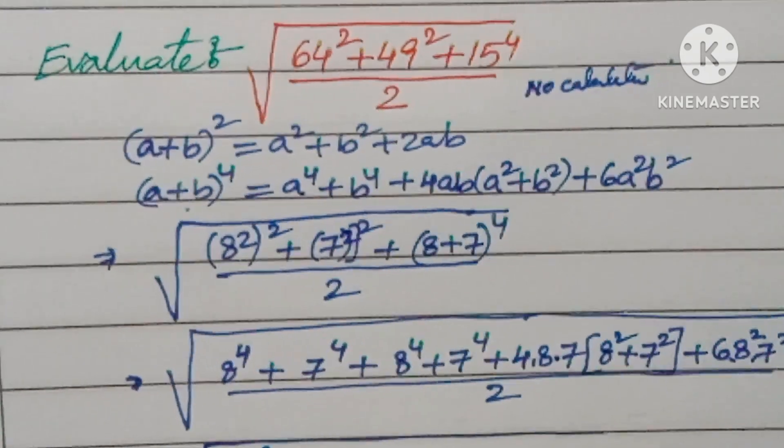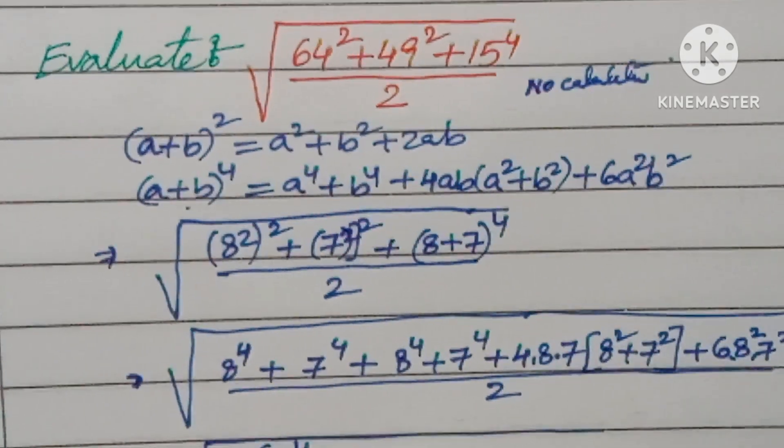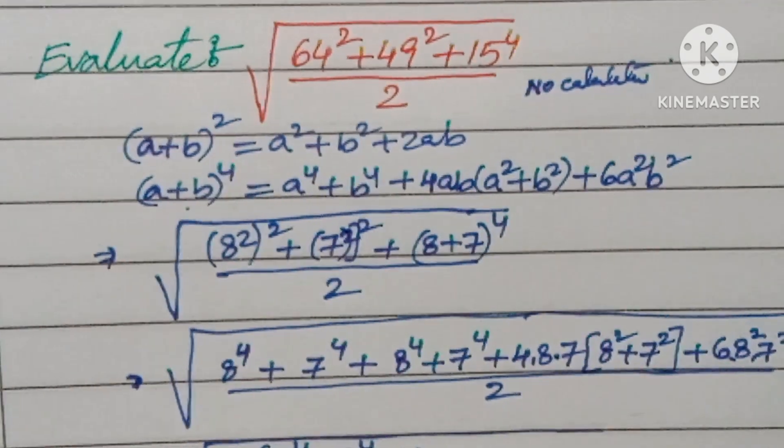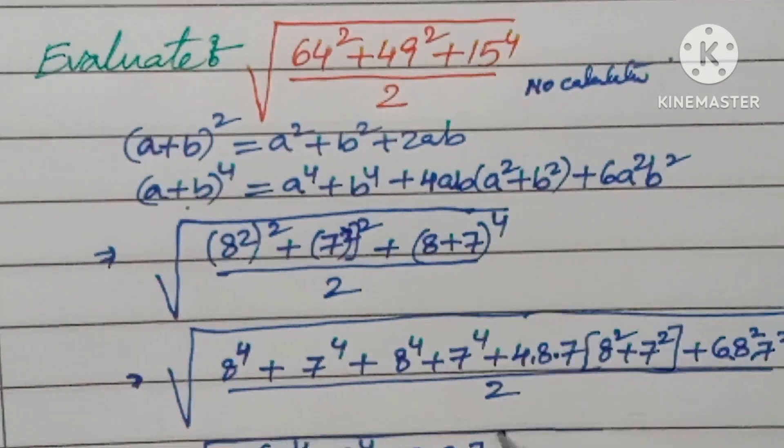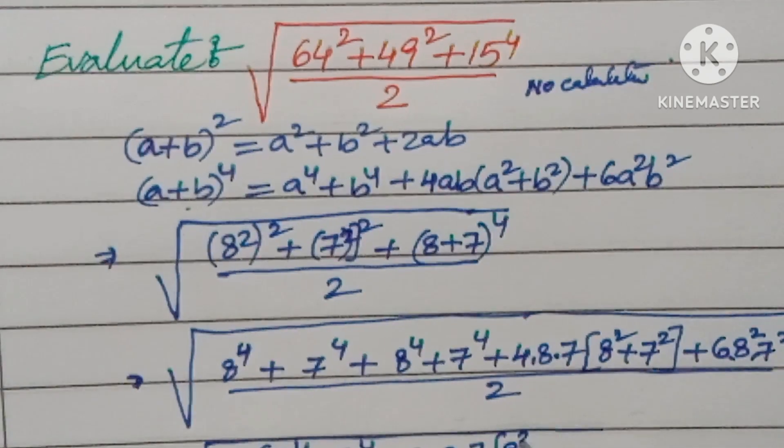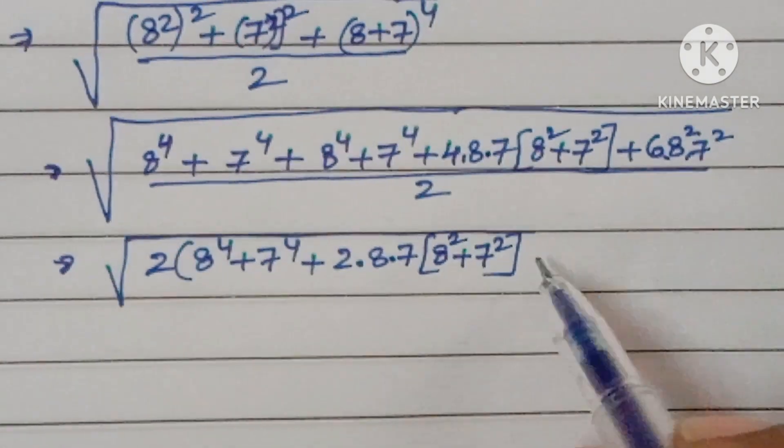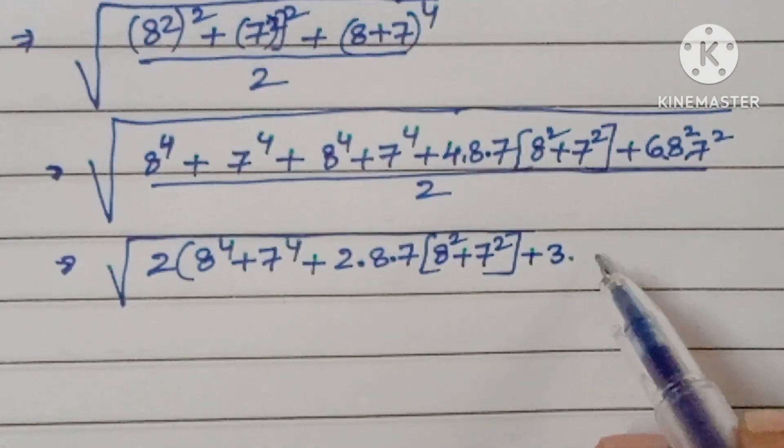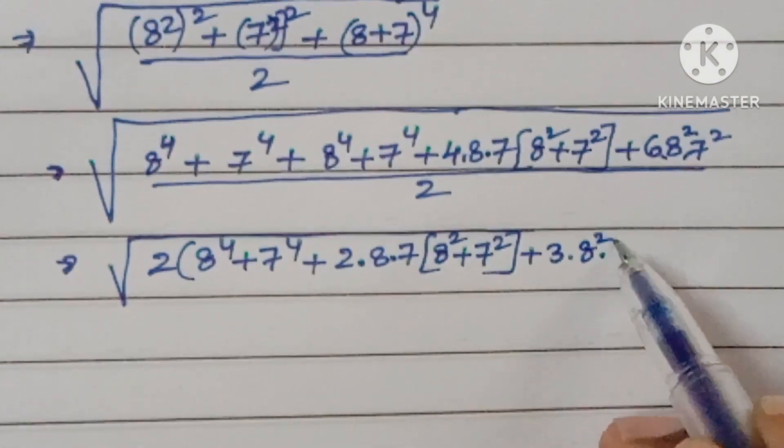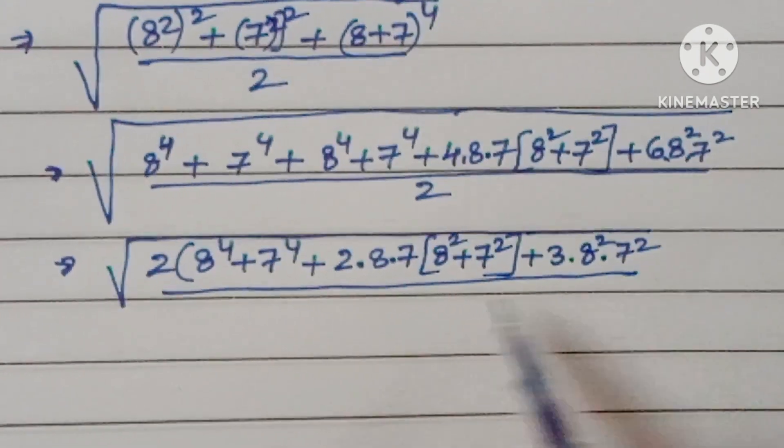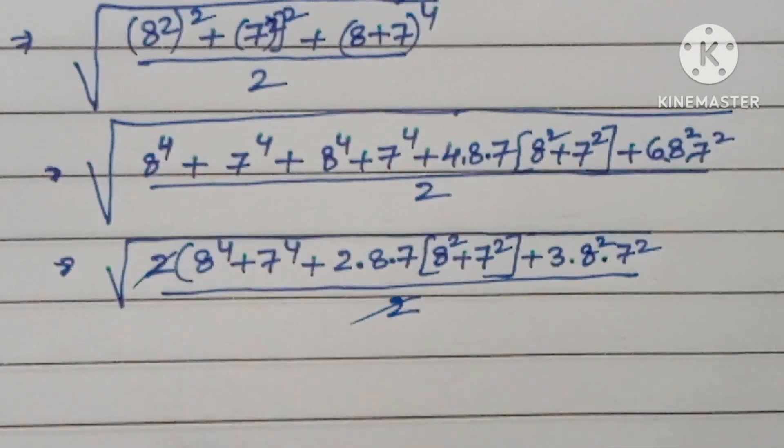You can take 2 common here. So 2 times (8⁴ plus 7⁴). If you take 2 common, you get 8⁴ plus 7⁴ plus 2 times 8 times 7 times (8² plus 7²) plus 3 times 8² times 7². The 2 in the denominator gets cancelled.